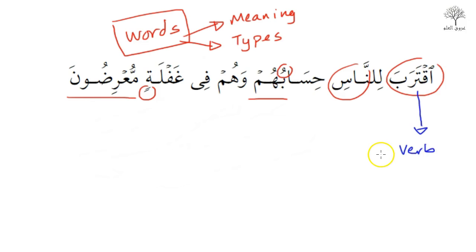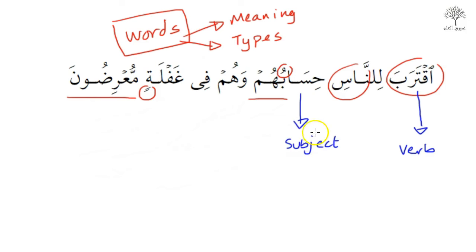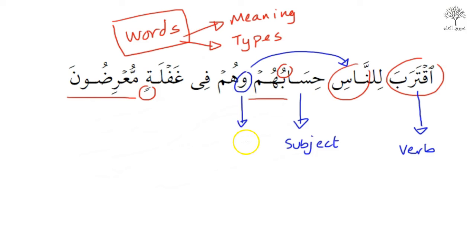This is the structure, as you can see on the screen now. For example, iqtaraba is a verb. Hisabuhum is the subject. The word linnas is actually supposed to appear after hisabuhum according to Arabic rules. However, by bringing it forward, this applies another rule where the meaning slightly changes. The waw here can come with different meanings in the Arabic language — here it comes for haal, which is the state of the word before.